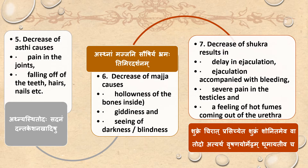Asthana Majjani Saushirya, Bhrama, Timiradarshana. Decrease of Majja causes hollowness of the bones inside, dizziness, and seeing darkness or blindness.